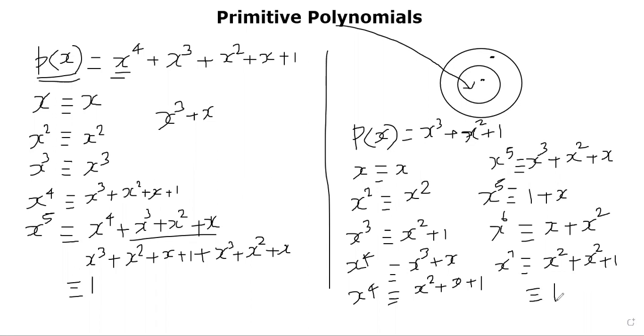So how many polynomials did I generate? I generated from power 1 to power 7, 7 polynomials, which means that I'm able to cover all the non-zero polynomials of degree 2.